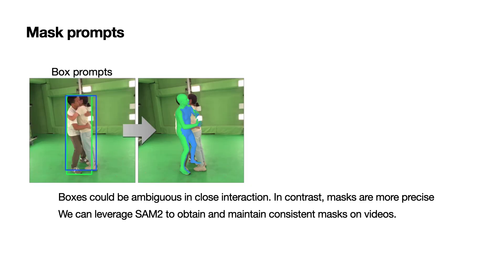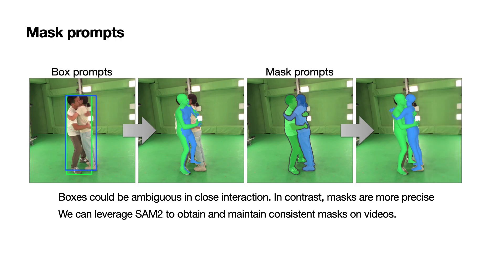Next, we demonstrate the purpose of mask prompts. In this example, it's difficult to tell which person the bounding box refers to due to the interaction. As a result, the model makes duplicate predictions. In contrast, mask prompts provide precise spatial detection, and our model reconstructs the correct interaction.